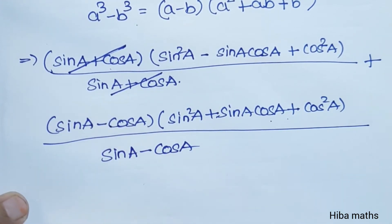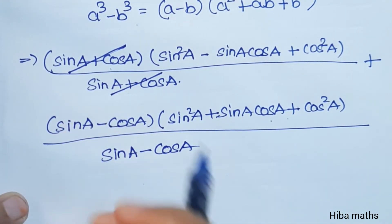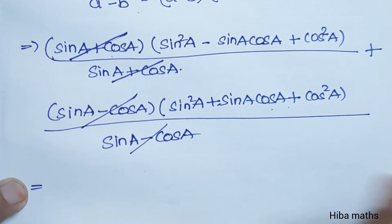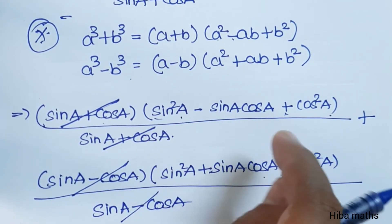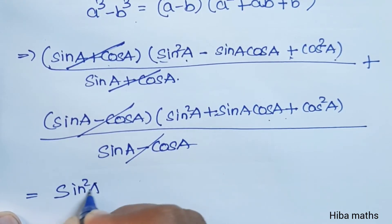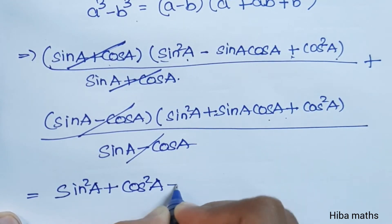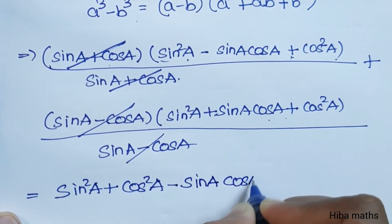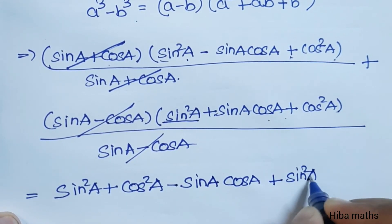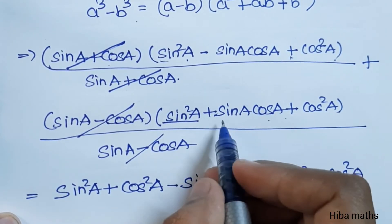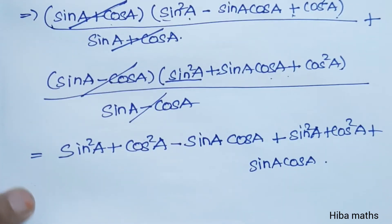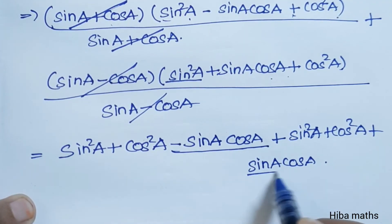In the numerator and denominator, sinA plus cosA cancels with sinA plus cosA, and sinA minus cosA cancels with sinA minus cosA. We are left with the simplified expression. Combining the two parts: minus sinA cosA plus sinA cosA — these two cancel.